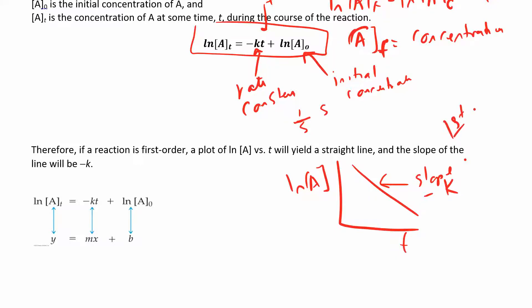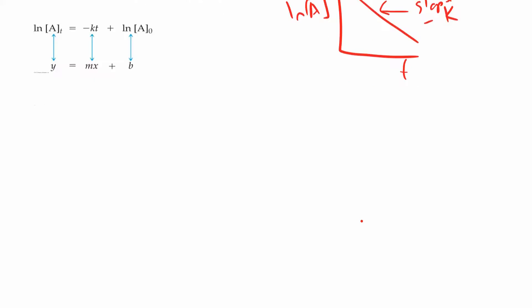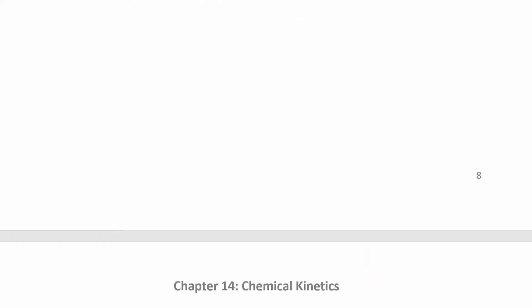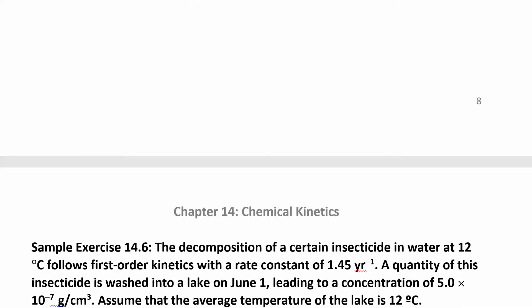If you're second-order or zeroth-order you won't get a straight line, but first-order kinetics gives you a straight line when you plot the natural log of [A] versus time. Let's use this equation.